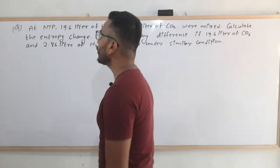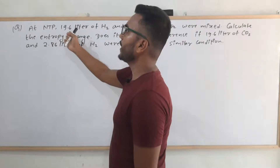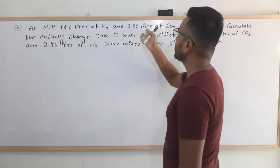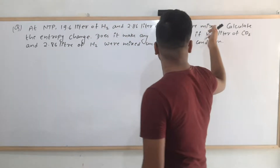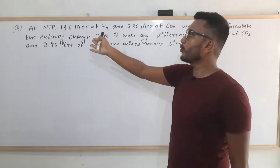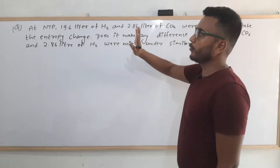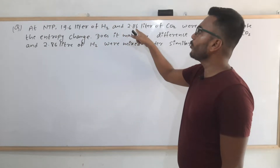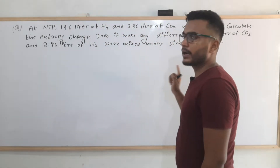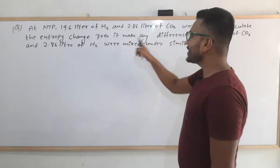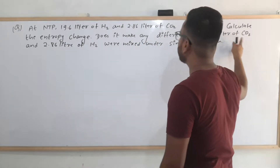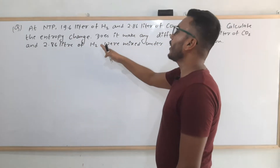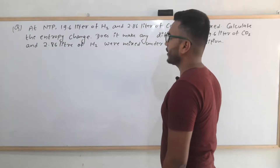This is the third numerical problem. At NTP, 19.6 liters of hydrogen and 2.86 liters of carbon dioxide were mixed. Calculate the entropy change. Does it make any difference if 19.6 liters of carbon dioxide and 2.86 liters of hydrogen were mixed under similar conditions?